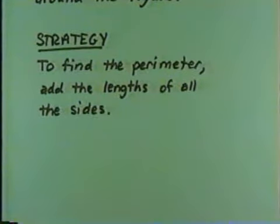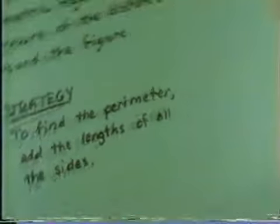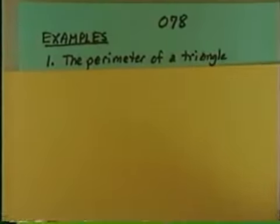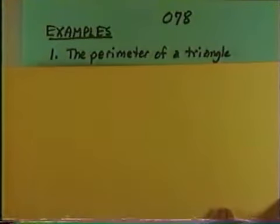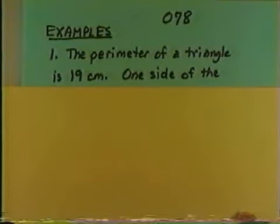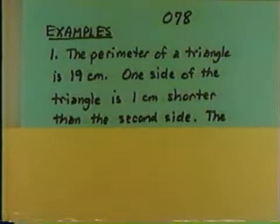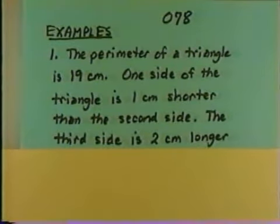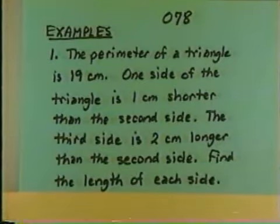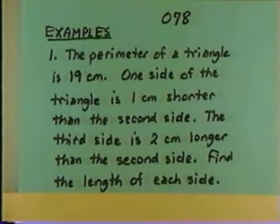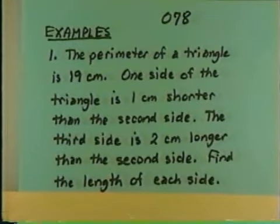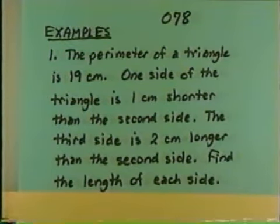We're going to look at some examples of finding the perimeter. Let's begin with example one: the perimeter of a triangle. The perimeter of the triangle is 19 cm. One side of the triangle is 1 cm shorter than the second side. The third side is two centimeters longer than the second side. Find the length of each side.